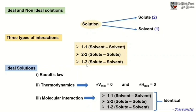If all these three interactions are identical, then the solution can be termed as an ideal solution. A solution can be termed as ideal if it obeys any one of the following three conditions.